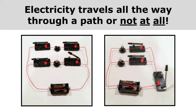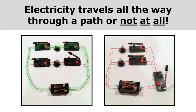It's very important to understand that electricity travels all the way through a path or not at all. So it doesn't matter whether a bulb is in front of a switch or after a switch. If there is a switch that's open creating a gap along a path and electricity cannot get from the battery through the path and back to the other side of the battery, then nothing along that path will work. You can see in this first picture that the top bulb is glowing because electricity can get from the battery through that top path and back. But one of the switches is open on the other path, so electricity cannot get through that path at all — it only flows around the top path.